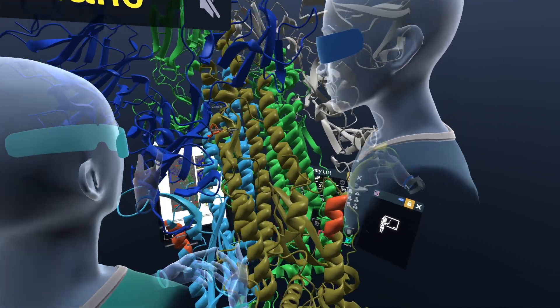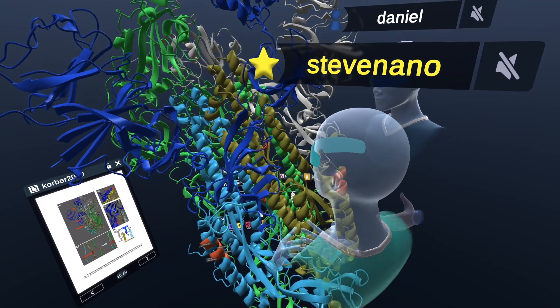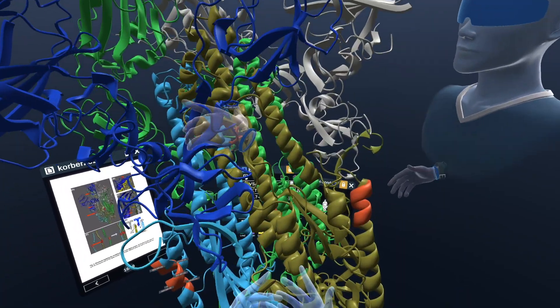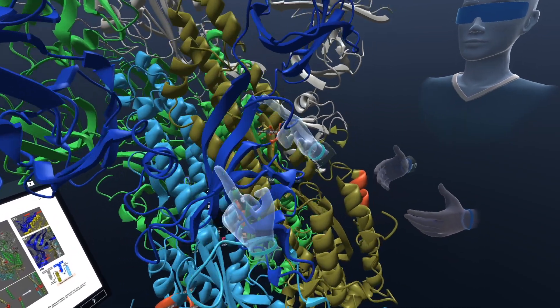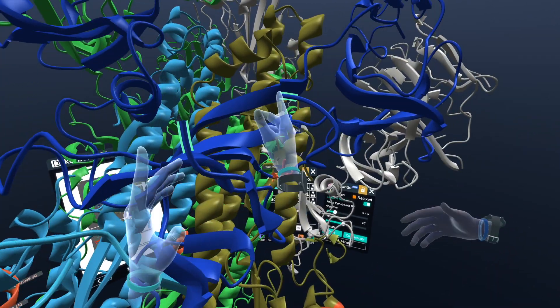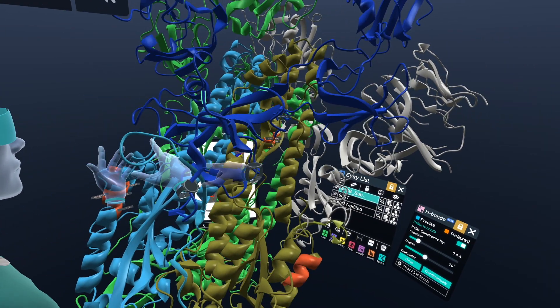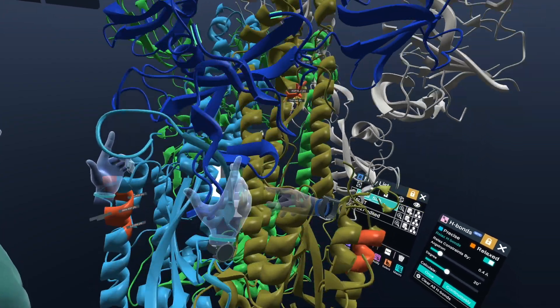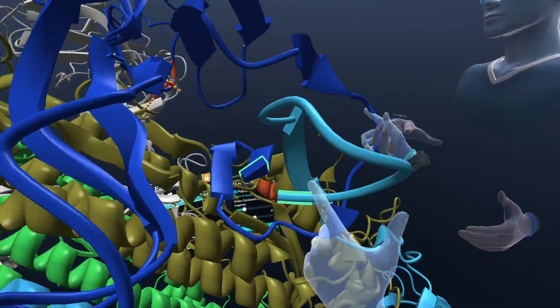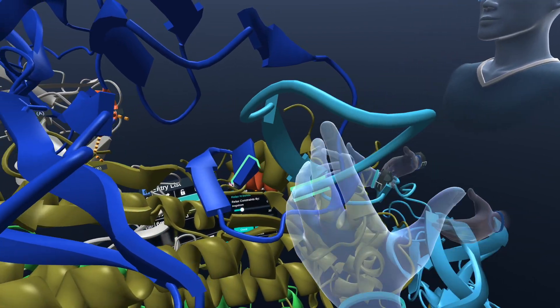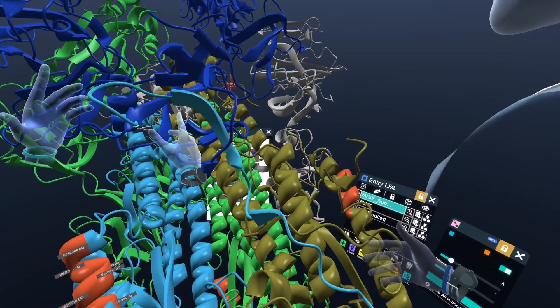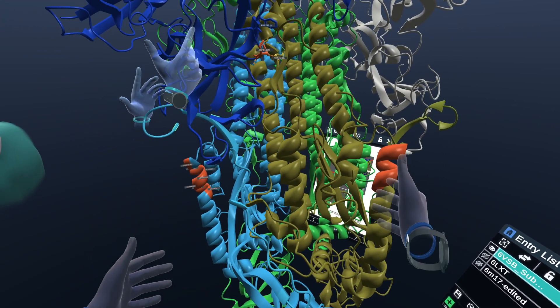So the cleavage site is actually over here. It's actually missing from the structure because it couldn't be solved by the cryo-EM. So it's right here in this gap in the loop between these two. There would normally be a few more residues. There are several arginine residues that allows for the host protease to cleave here in the subunit.